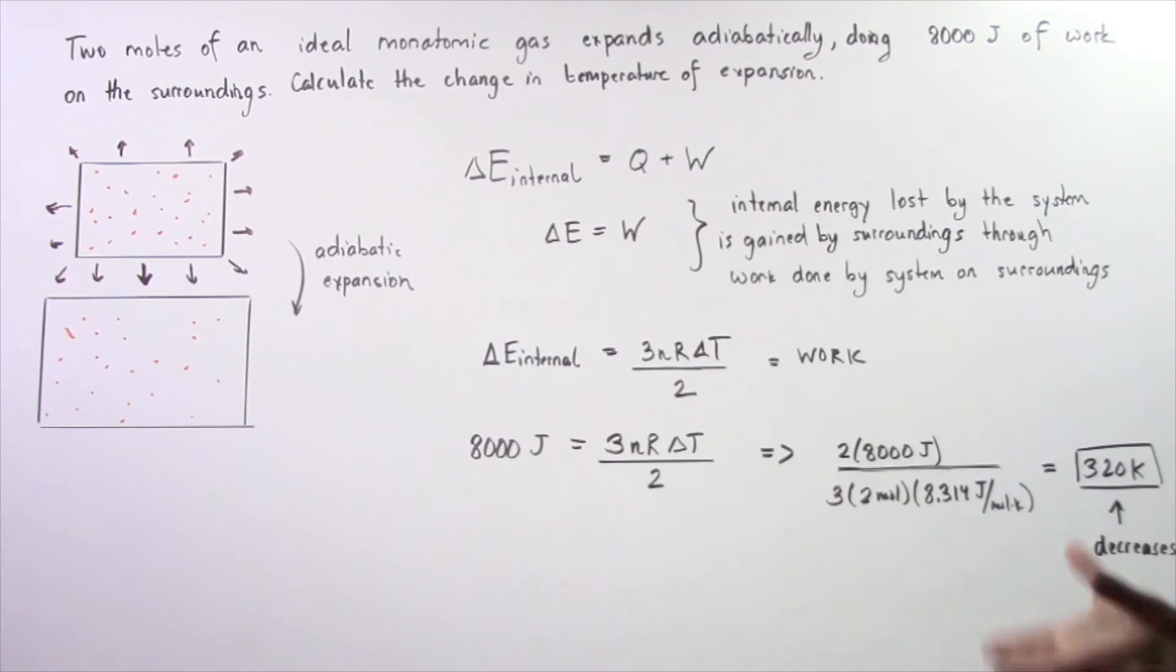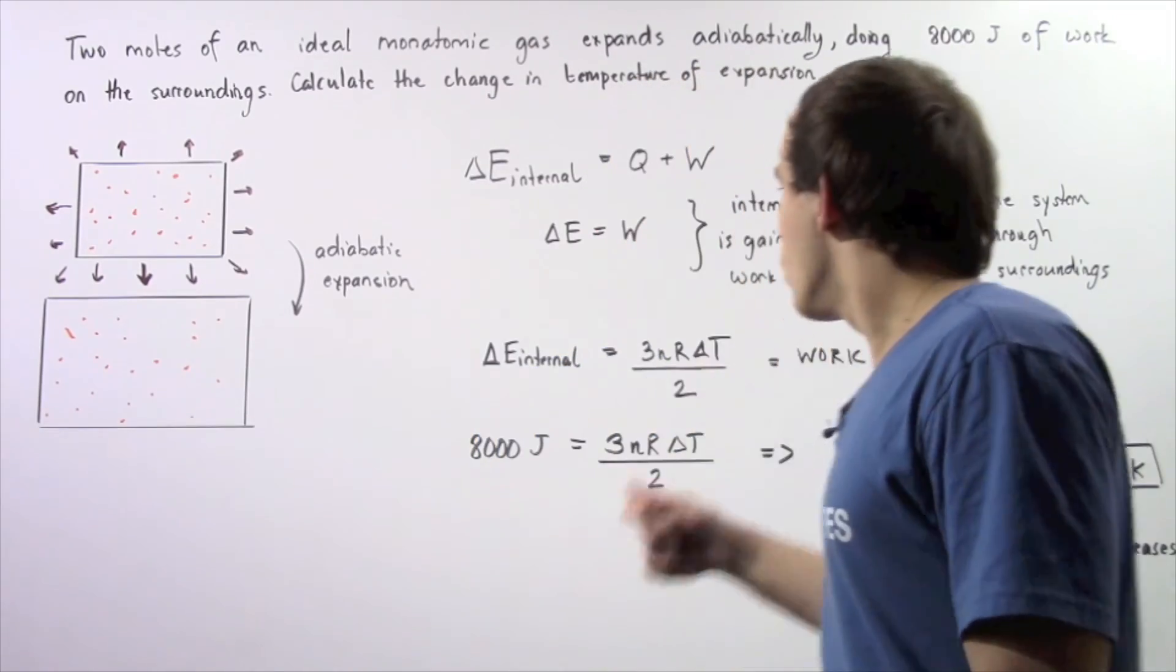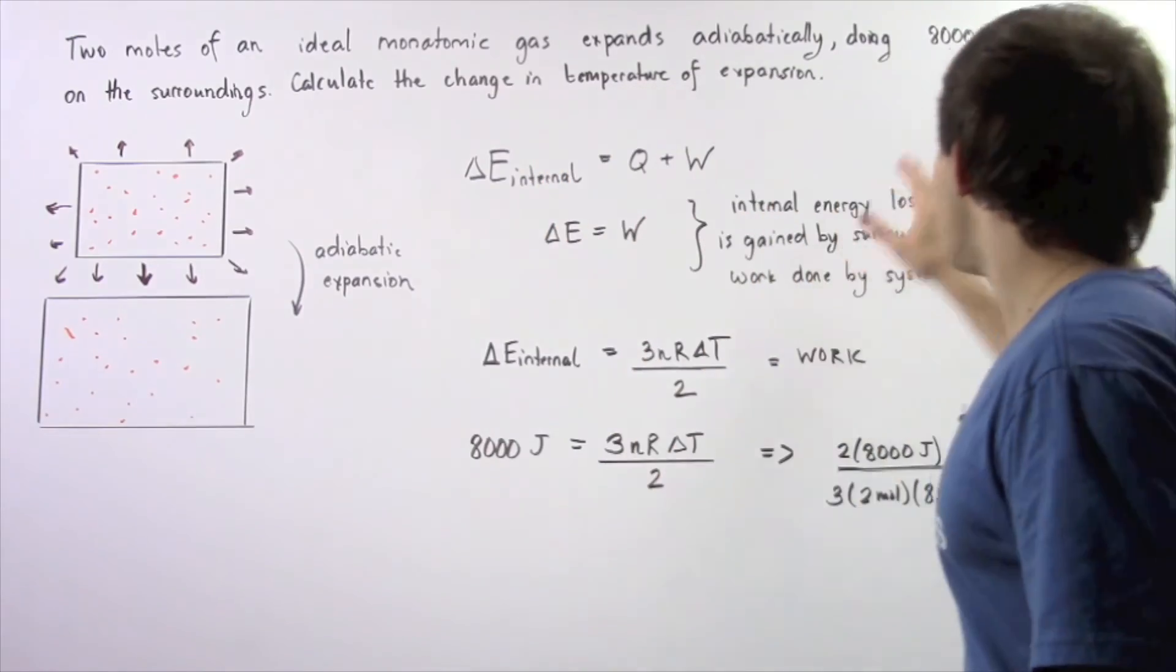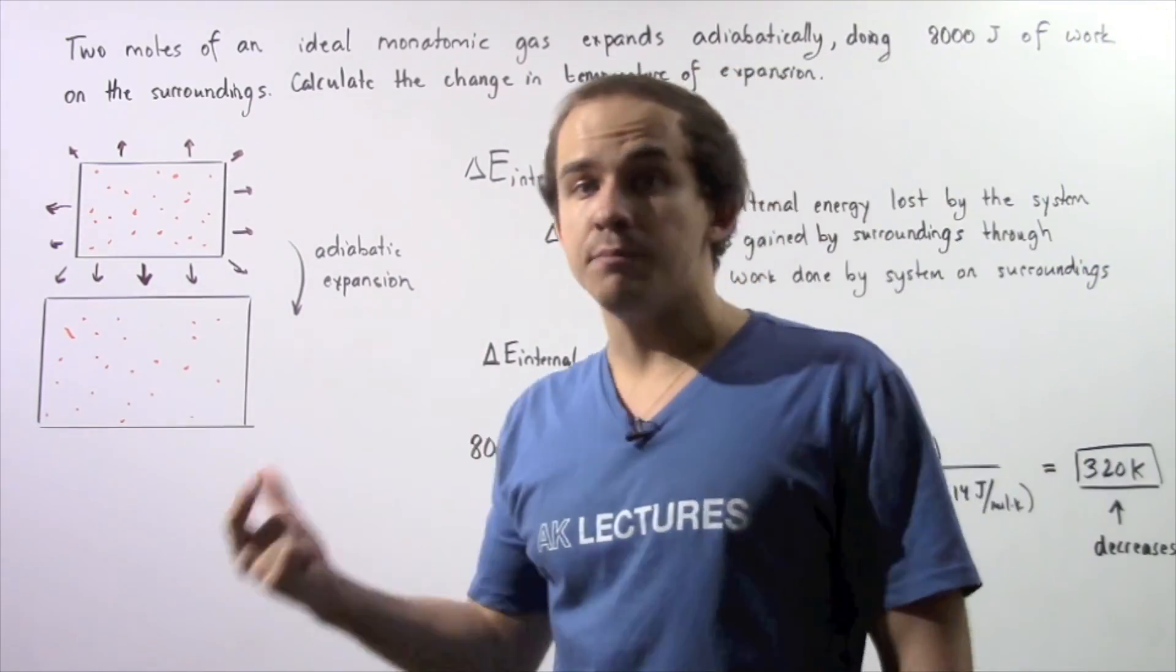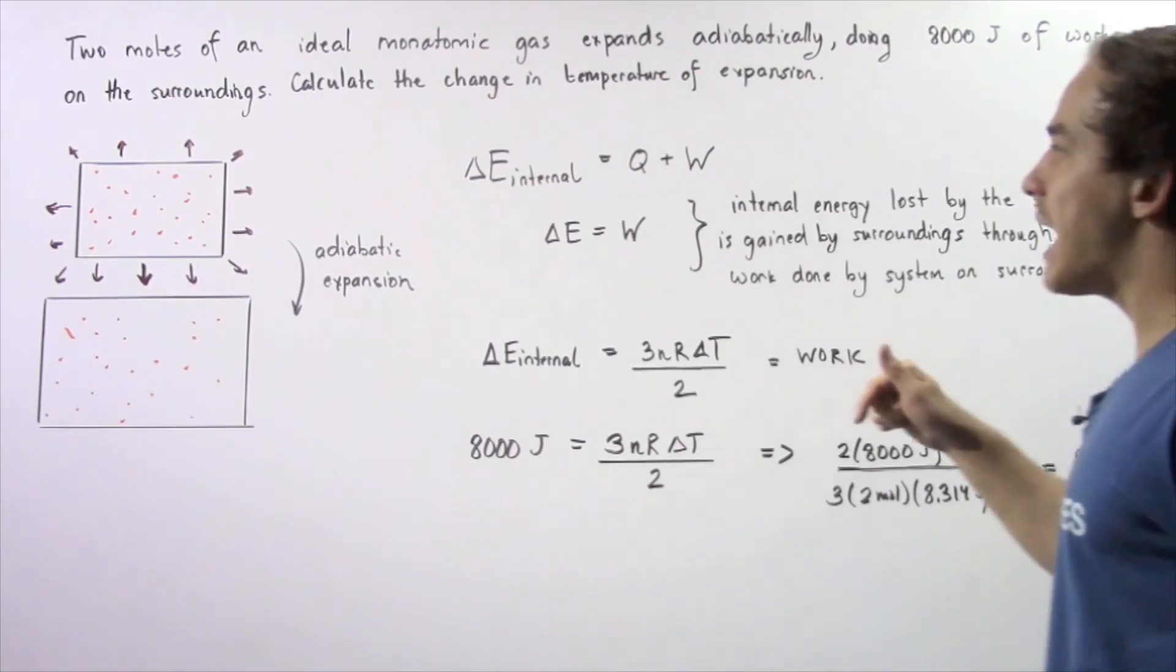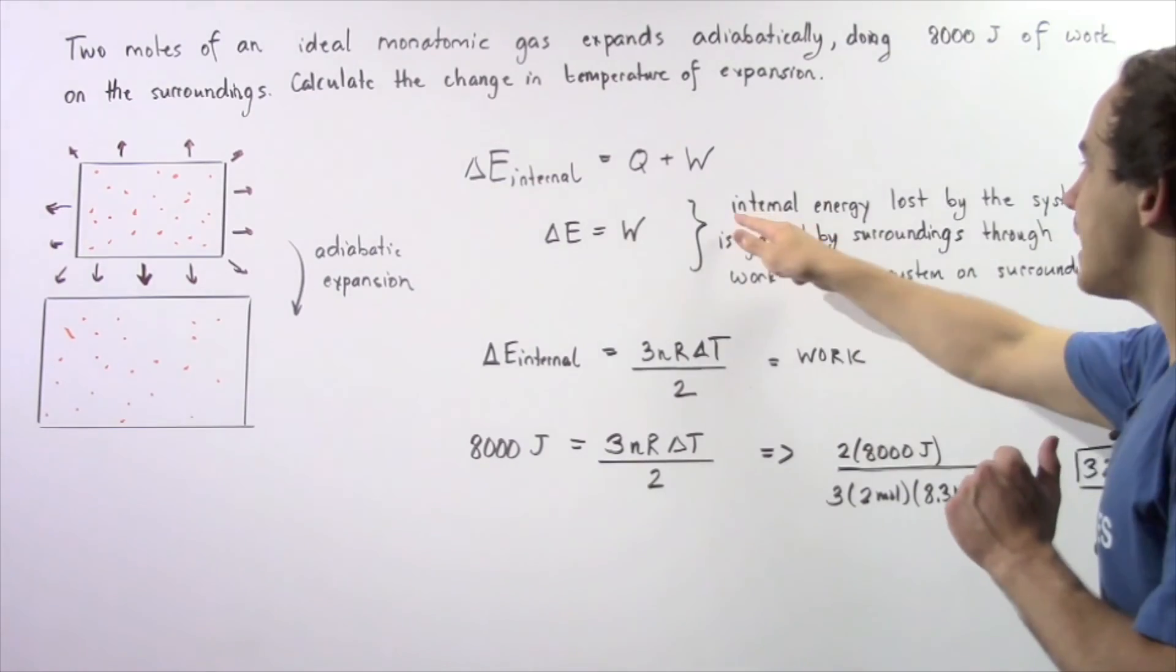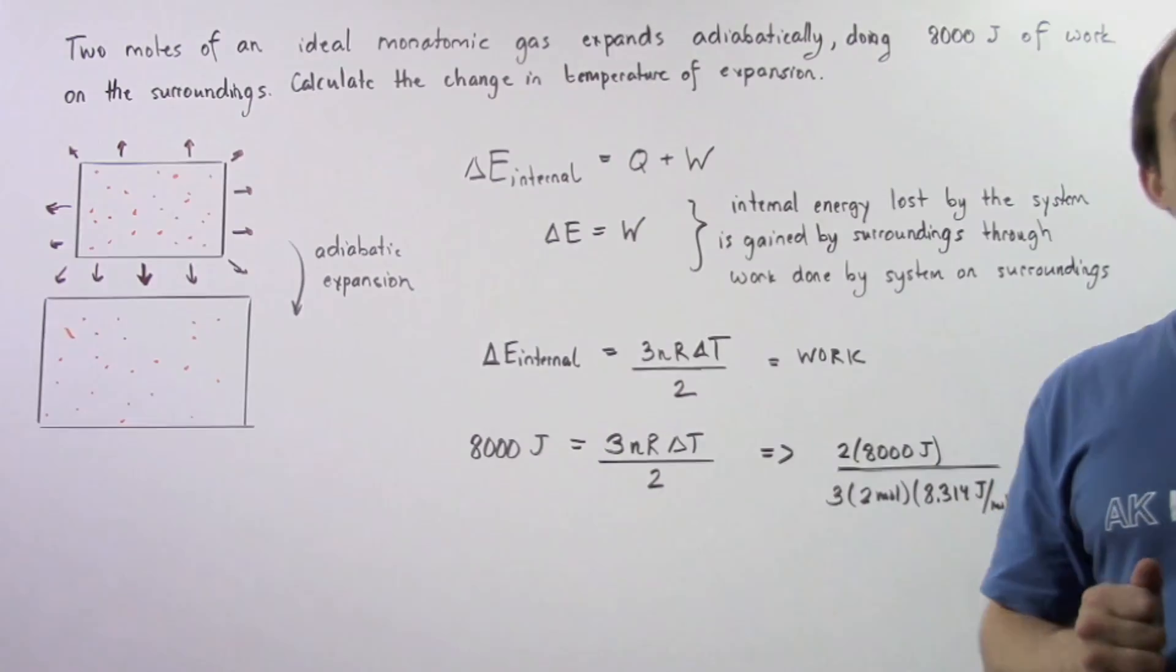Does the temperature of our system increase or decrease? Earlier we said that our system does 8,000 joules of work on the surroundings. Because the surroundings increase by 8,000 joules, the system decreases by that same amount. The internal energy decreases by a temperature of 320 Kelvins.